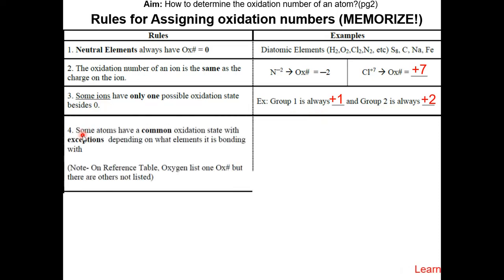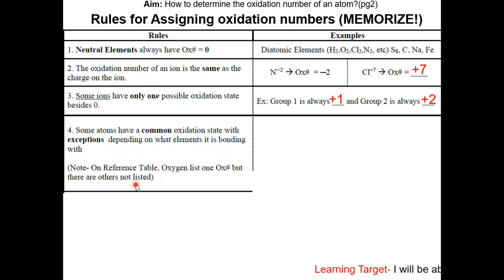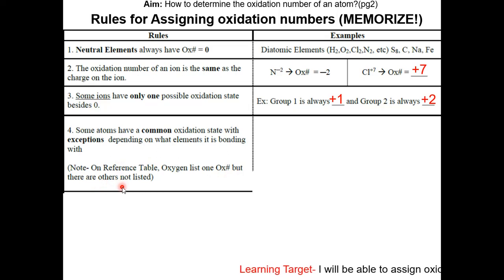Rule four: some atoms have a common oxidation state with exceptions depending on what element they are bonding with. Note that on the reference table, oxygen lists one oxidation number, but there are other ones that are not listed.